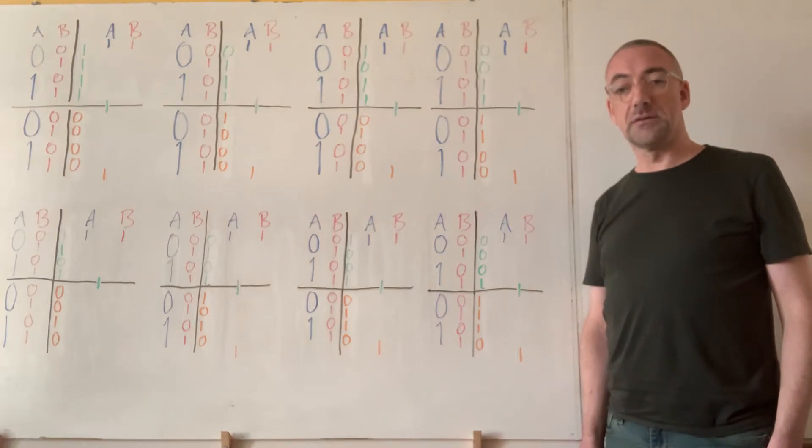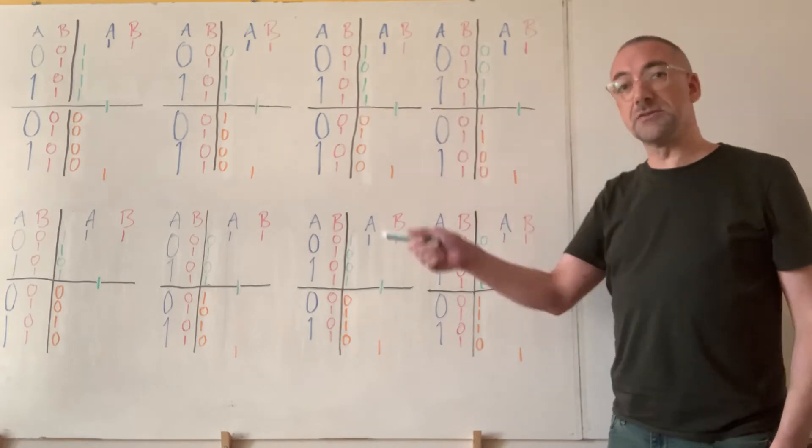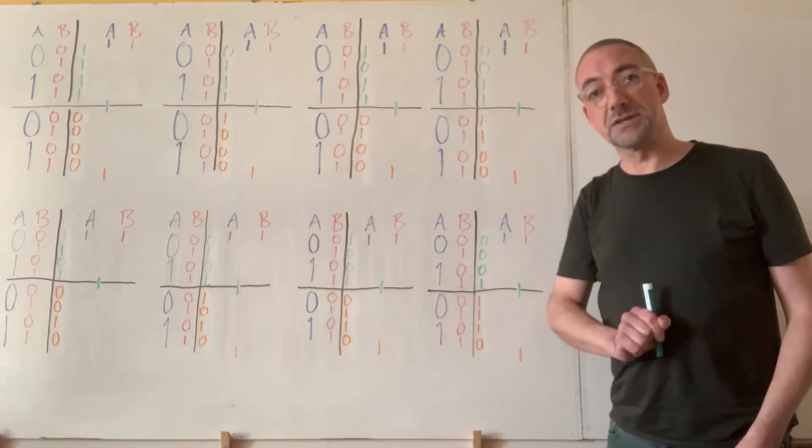16 gates, and what do you get? Rather frustrated and slightly upset. But I've written out all 16 truth tables on the board, and now I'm going to build all 16 circuits.